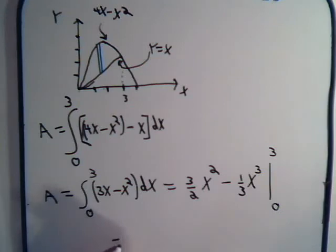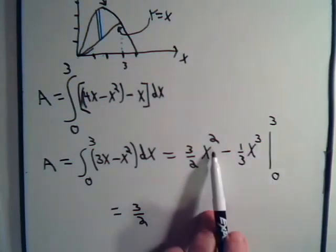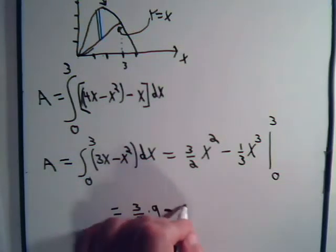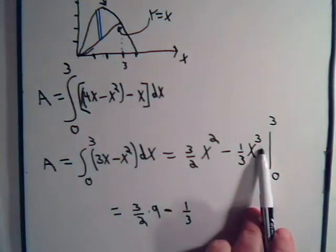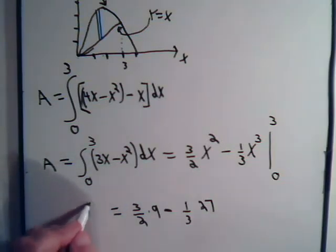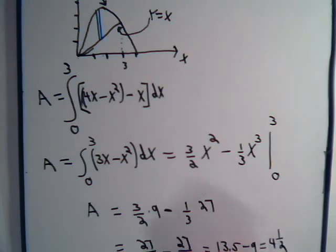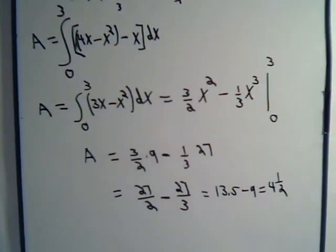So, let's see, this will equal, we have, put 3 in here, that would be 9, minus 1 third, the cube, that's 3 times 3 is 9 times 3 is 27. And that should be the area. This would be 27 over 2 minus 27 over 3. And this would be 13 and a half minus 9. So the area will be 4 and a half units. And that's it. There's no more to the problem than that.